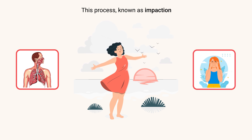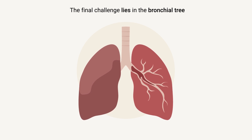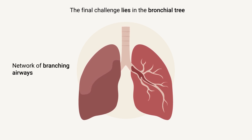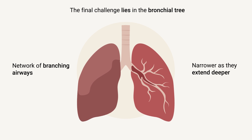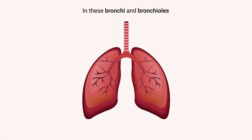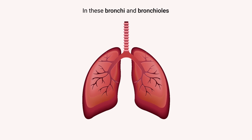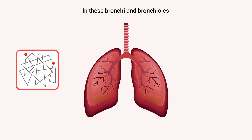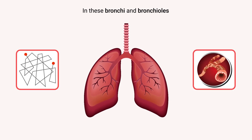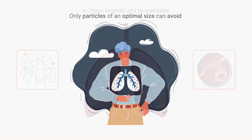However, smaller particles can still navigate through this turbulent region. The final challenge lies in the bronchial tree, a network of branching airways that become progressively narrower as they extend deeper into the lungs. In these bronchi and bronchioles, super small particles — which are light enough to be influenced by Brownian motion — often collide with the mucus lining the airway walls and become trapped.